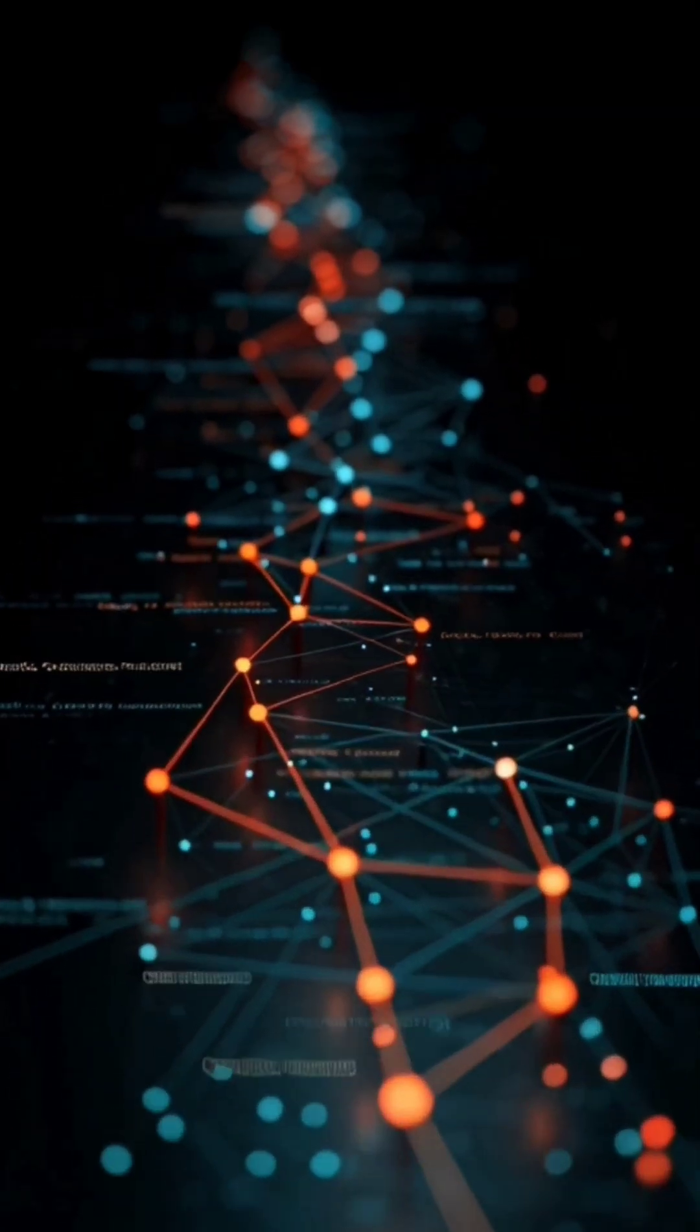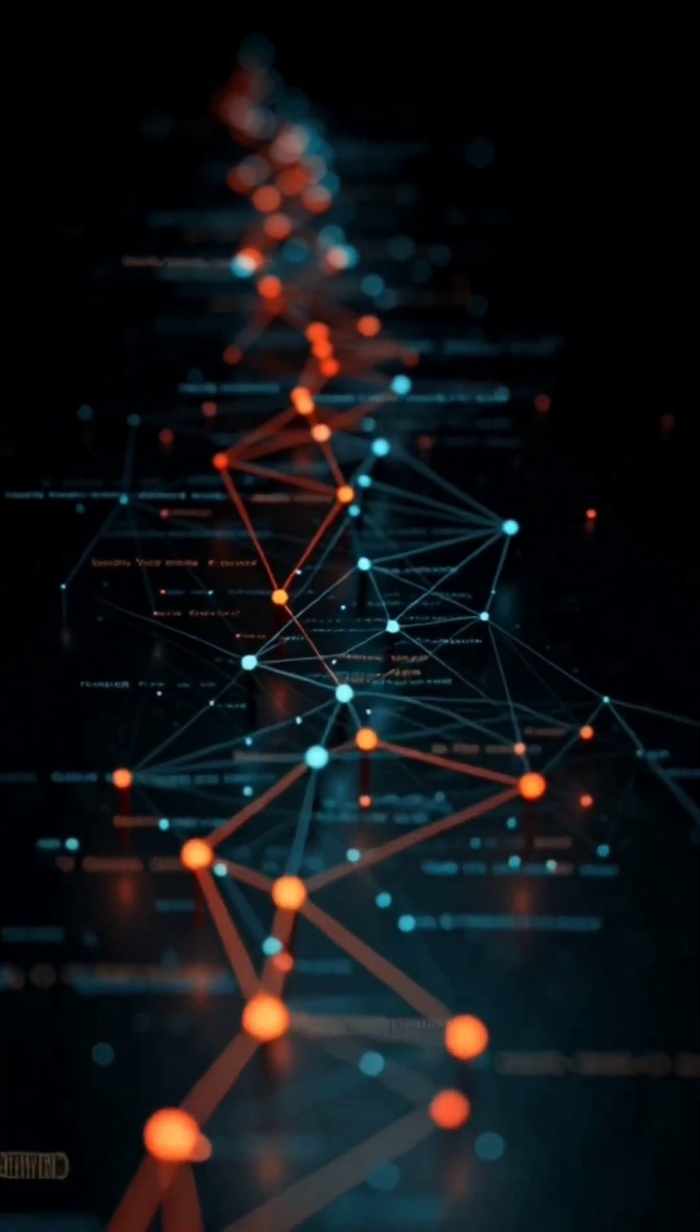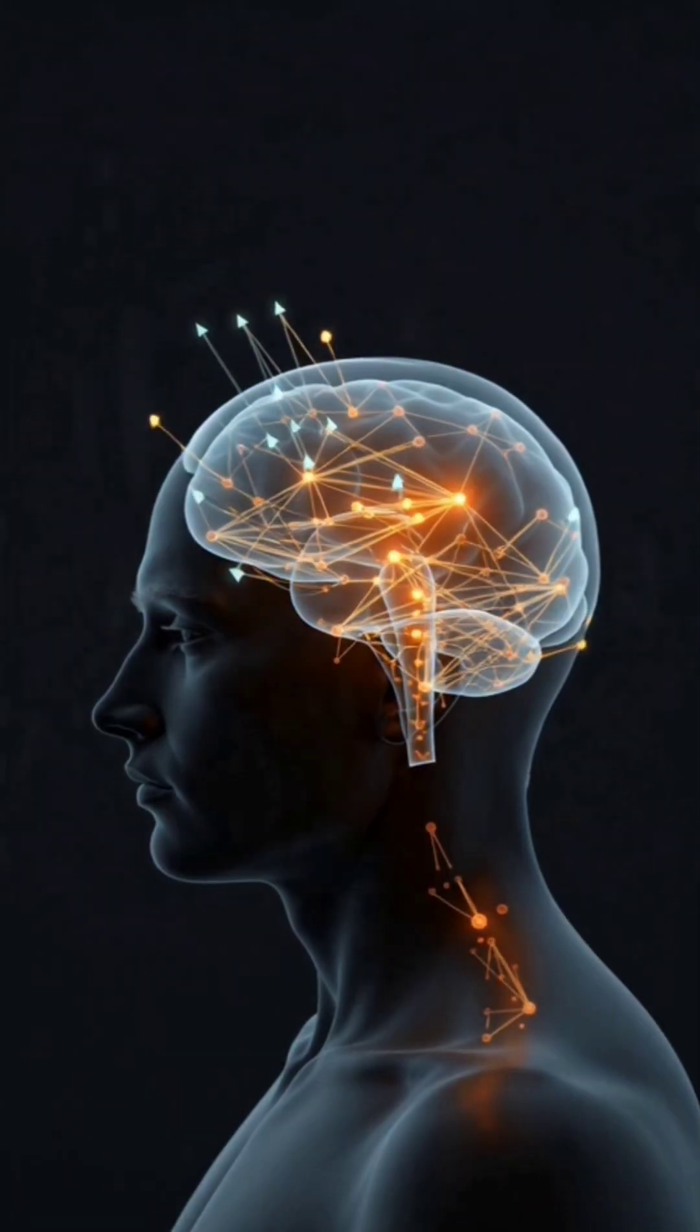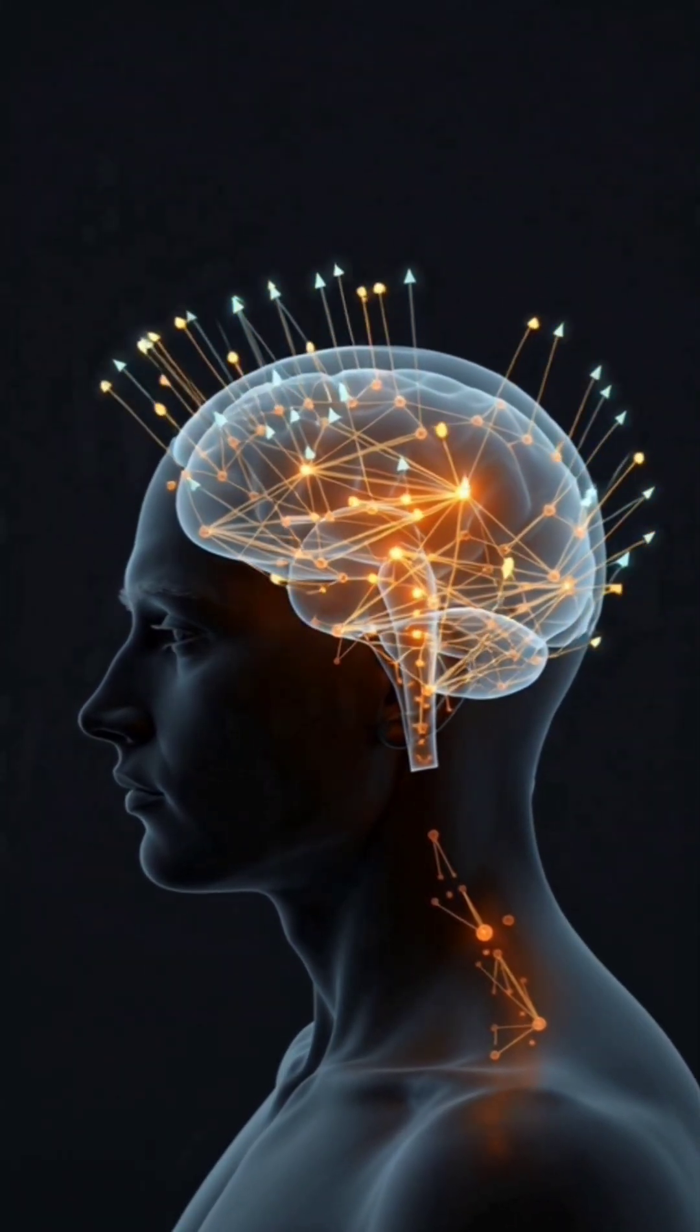Today, we understand the working of neural network. To understand neural network, first we need to understand how human brain processes information.